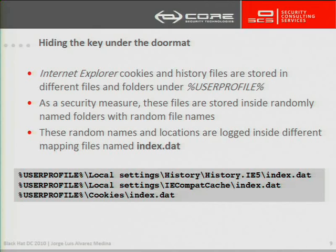Although those file and folder names are random, there is a map. Internet Explorer builds a map in a file called index.dat — and actually there are more than one. There are multiple index.dat files intended to track different things: some are for cookies, some are for user navigation, and so on.